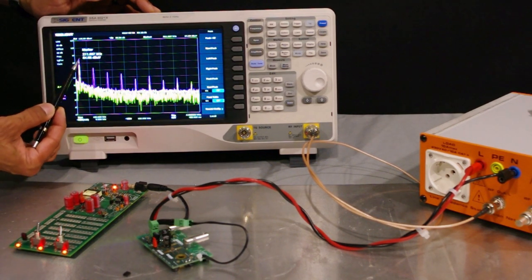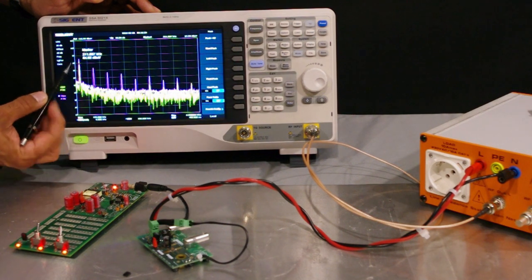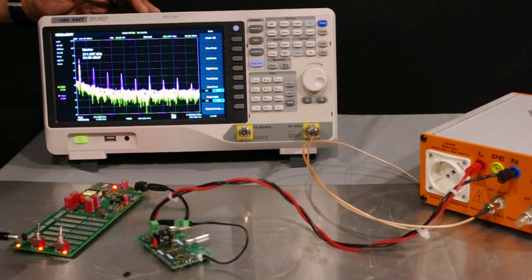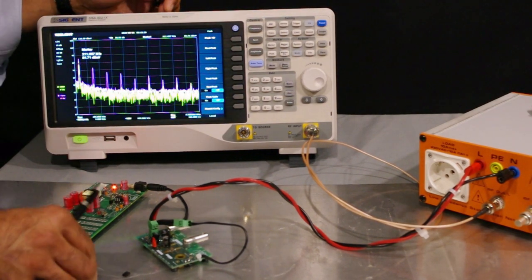You can see that the marker is at 210 kilohertz and you've got 84 dB microvolts on the peak of the yellow trace.